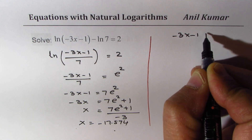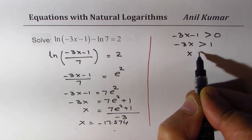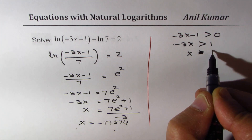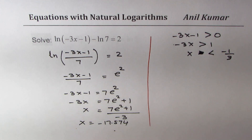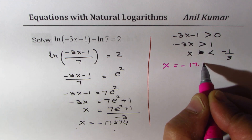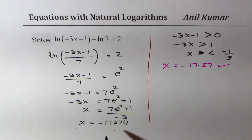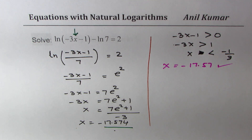Using a calculator, x is approximately minus 17.574. Now let's check the domain condition: minus 3x minus 1 must be greater than 0, meaning x must be less than minus 1 over 3. Since minus 17.57 is indeed less than minus 1 over 3, the solution x equals minus 17.57 is correct. I'd like you to verify this using your calculator by substituting the value back into the equation.